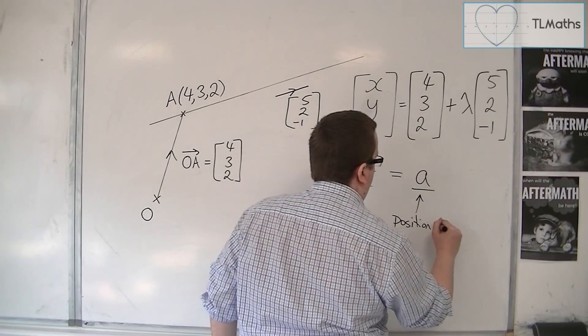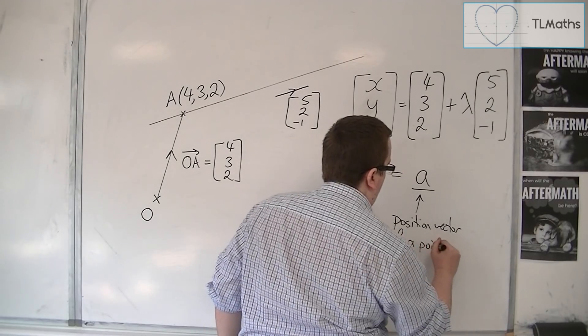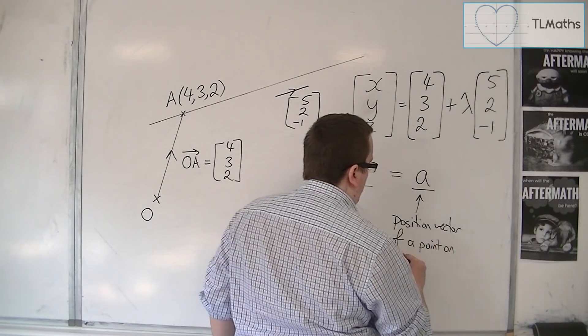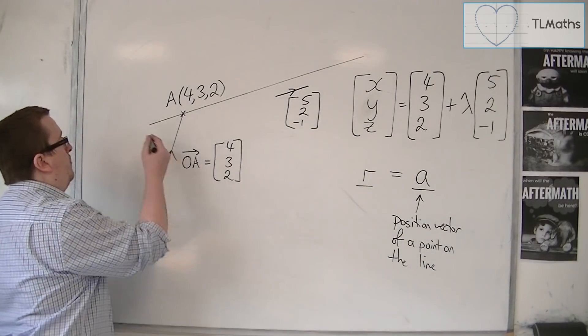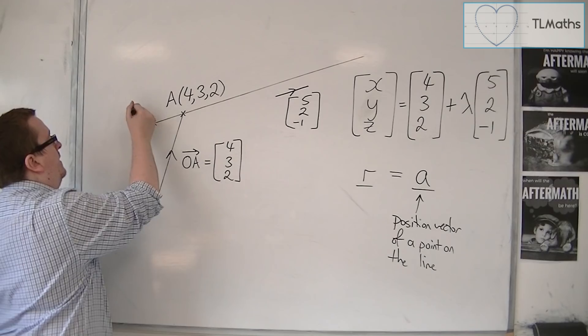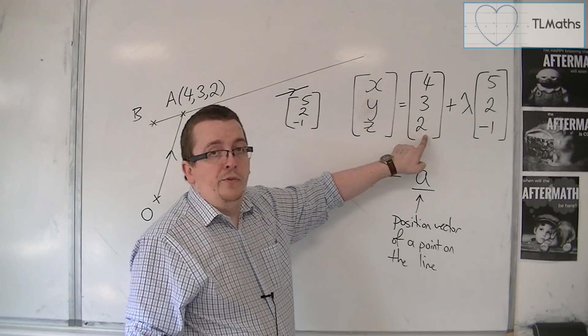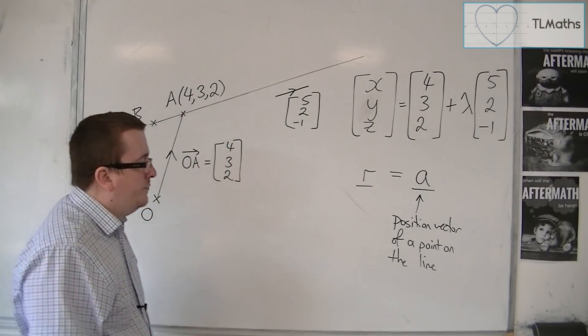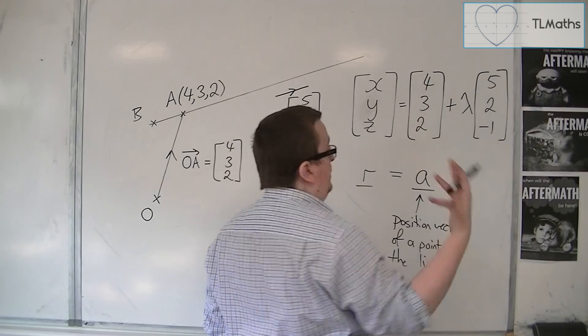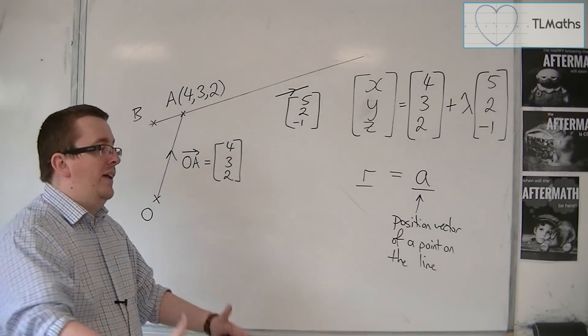Position vector of a point on the line, and it doesn't matter which point you choose. I could have had another point over here, a point B, and I could have used that as the position vector here. It doesn't matter. It wouldn't actually change the equation. Although the numbers would look different, it would work in the same exact way.